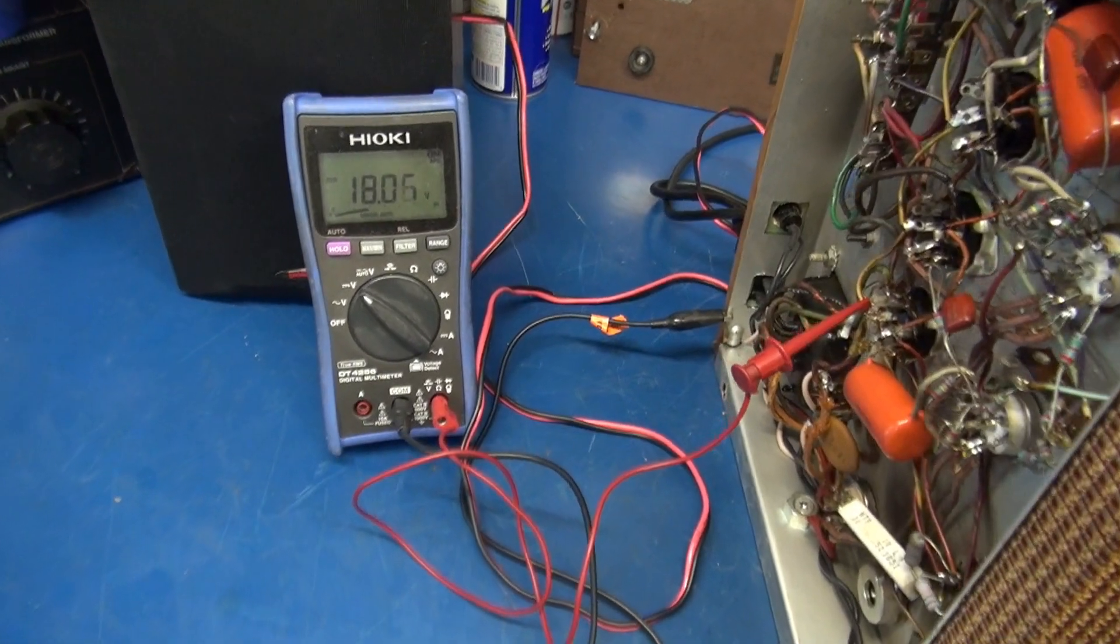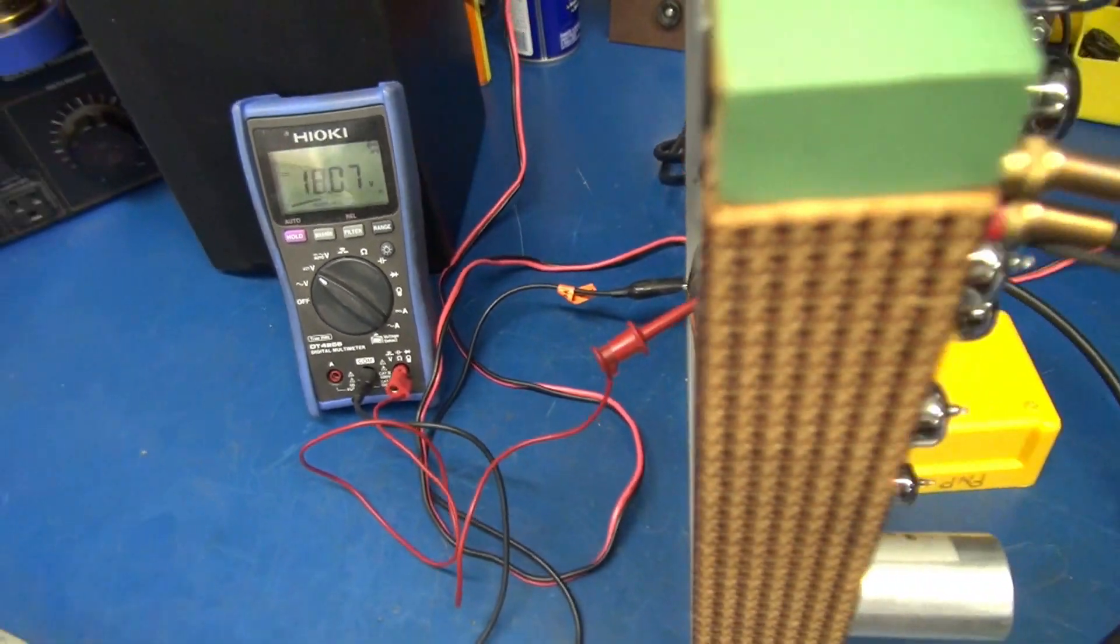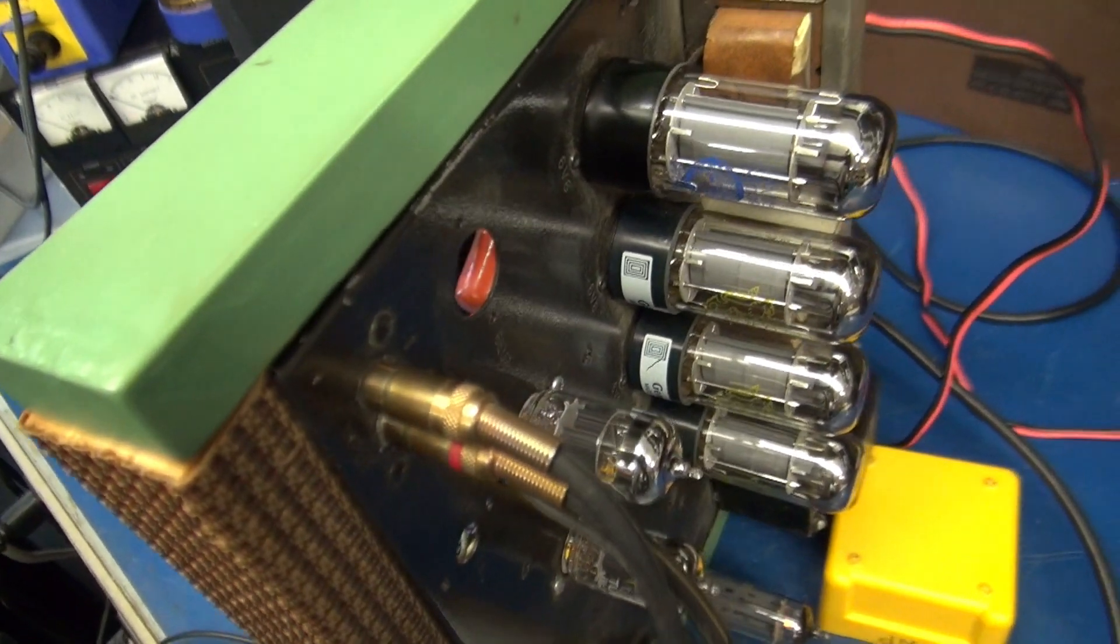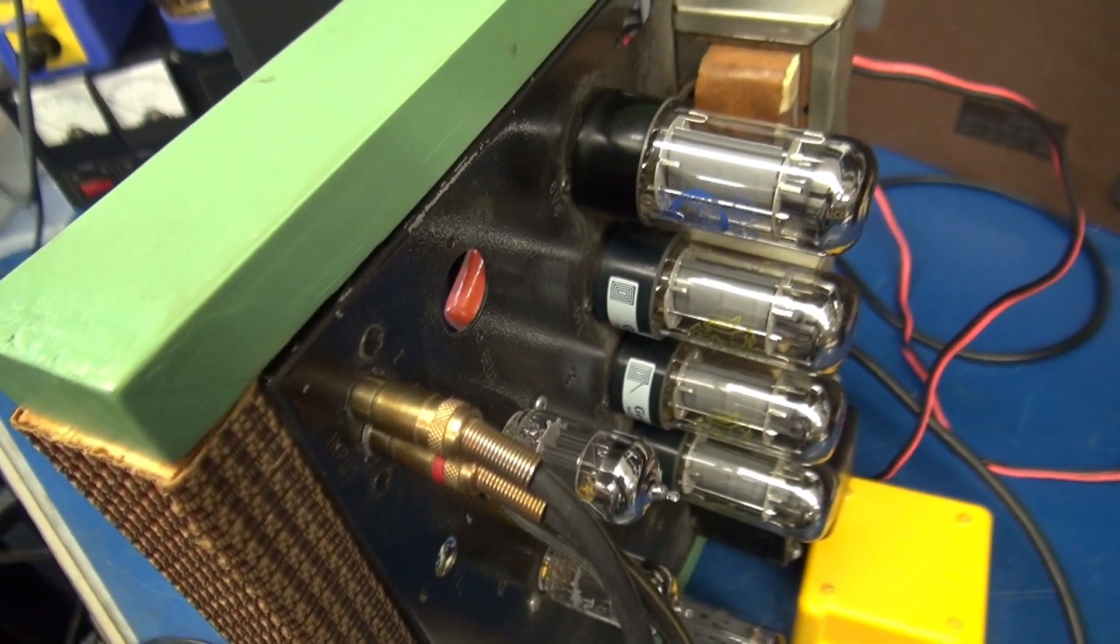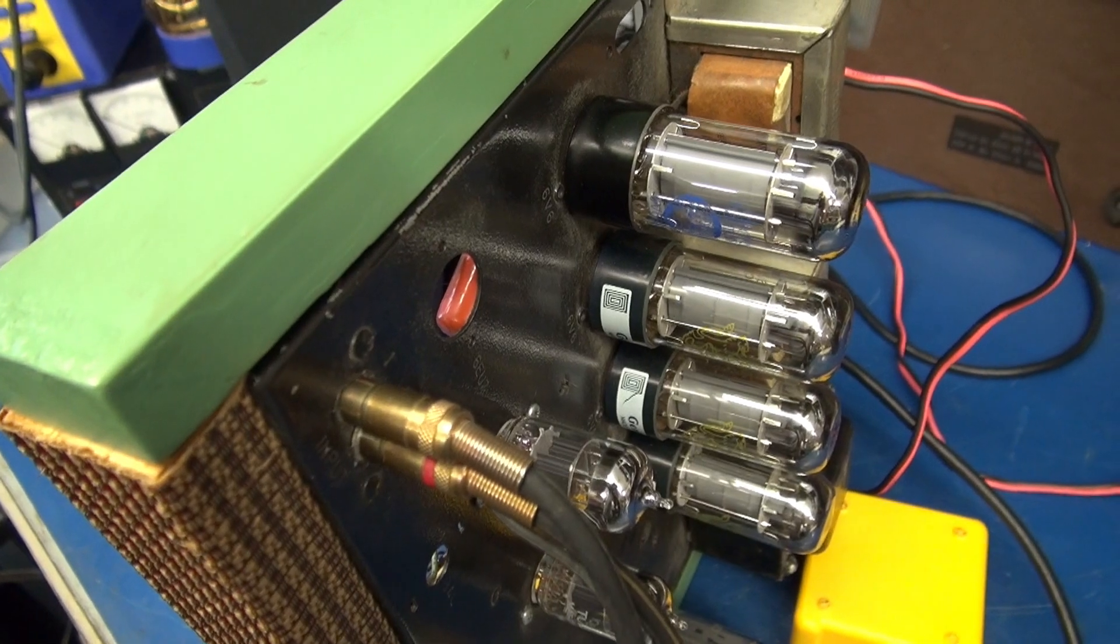Alright, I've had the amp sitting here cooking for about a half hour. She's hanging tight at 18 volts on the cathode resistor. I substituted in the Electro Harmonix 6V6. It's playing beautifully.